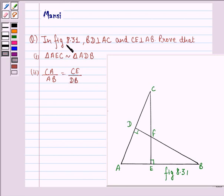The question says in figure 8.31, BD is perpendicular to AC and CE is perpendicular to AB.